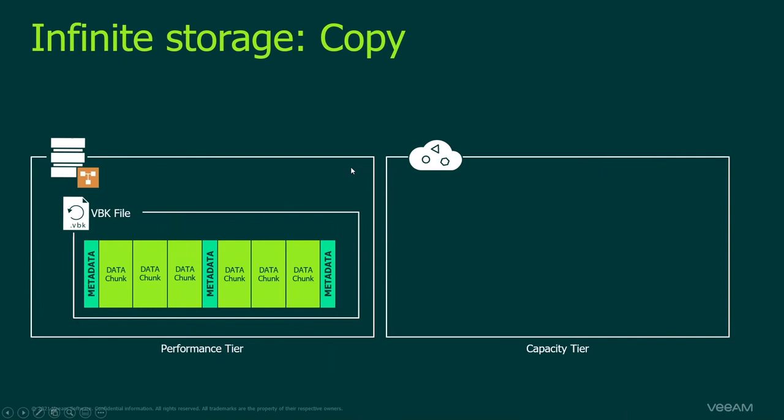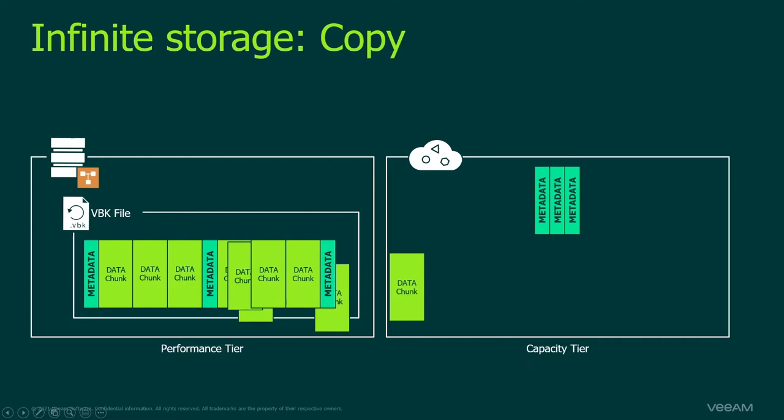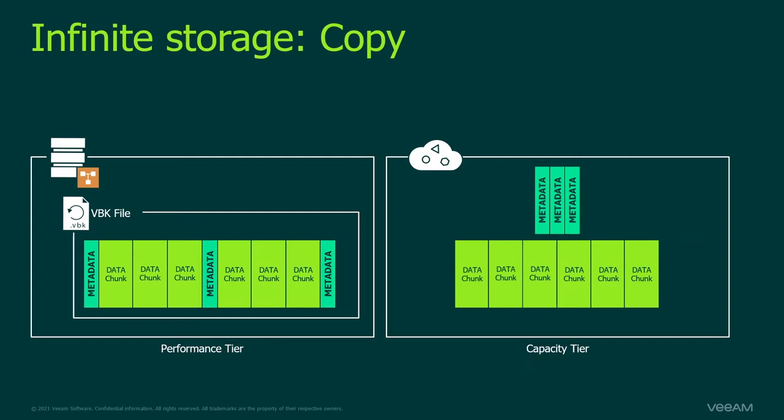How does the copy process work? We have Veeam backup files containing data and metadata. We copy the metadata to object storage and copy the data chunks to object storage. We store that in our index, and this way you can always restore either from the performance tier or from the capacity tier, depending on what has happened.